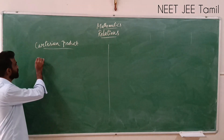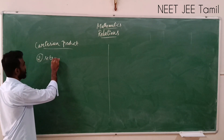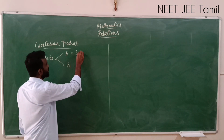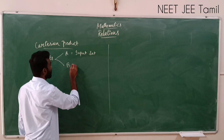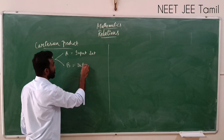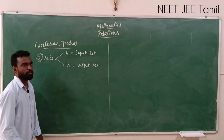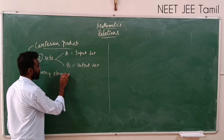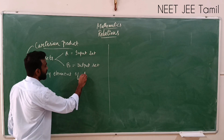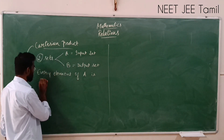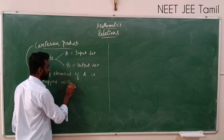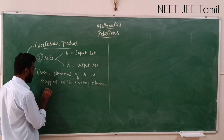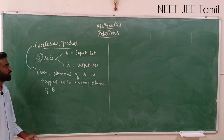Let us consider two sets: set A and set B. Here, set A is an input set and set B is my output set. So what is this Cartesian product? Cartesian product is every element of A mapped with every element of B.